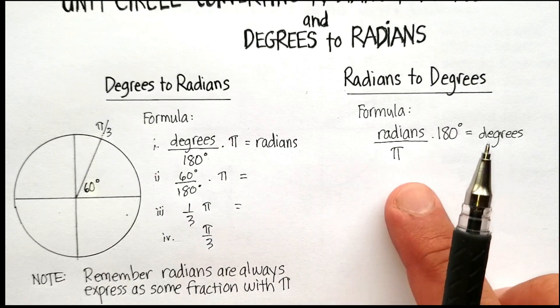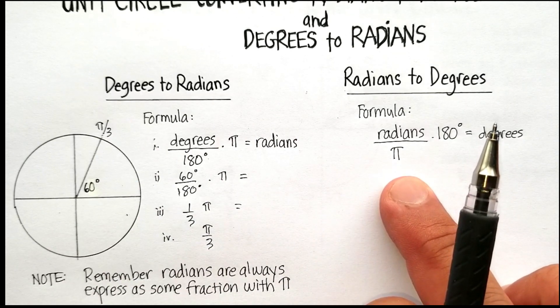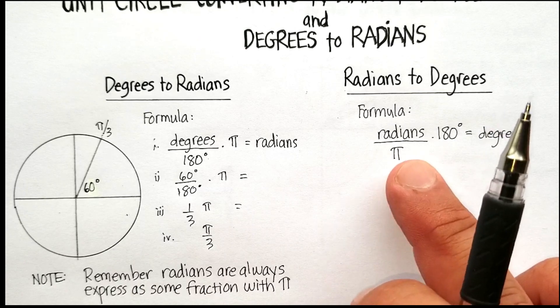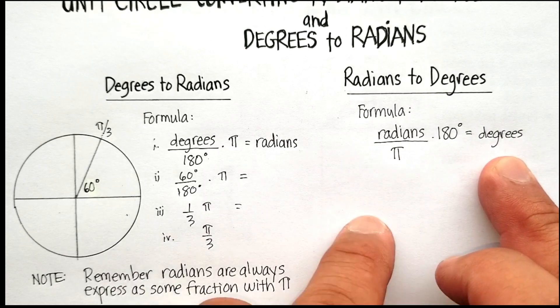Now, if this formula is holding true, then the reverse, I should be able to use pi over 3 and then get back to 60 degrees. Let's see what happens.